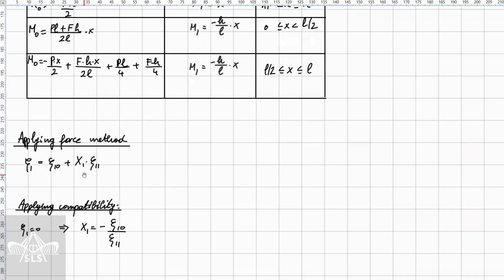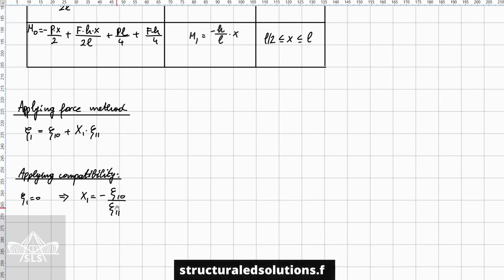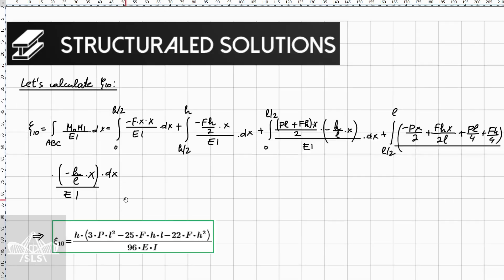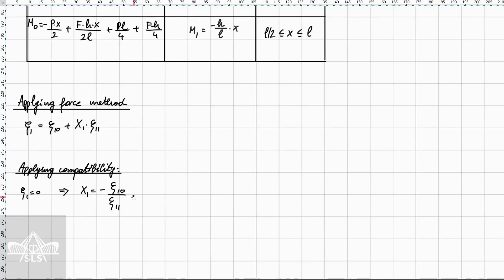We now apply the force method and the compatibility condition to find the redundant. We need to evaluate two integral quantities, δ₁₀ and δ₁₁, in order to obtain the value of the redundant, which is the horizontal support reaction at point C.